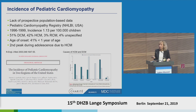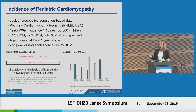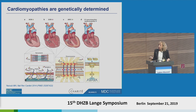Looking at the cause of HCM and DCM, we find HCM to be more frequent in metabolic cardiomyopathy and malformation syndromes, while DCM is more common in neuromuscular disorders and myocarditis. Then we have the familial cardiomyopathies, also called idiopathic cardiomyopathies. These primary, so-called primary cardiomyopathies are going to be the focus of my talk.